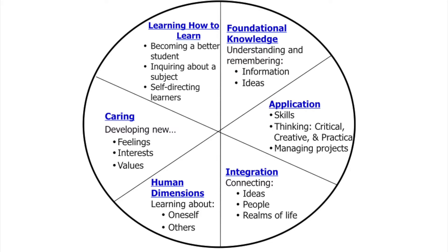Fink's taxonomy starts with foundational knowledge, which deals with foundational understanding of information and ideas. With this foundational understanding in place, one then moves onto the application of that knowledge, realized through the application of skills, critical and analytical thinking, and the management of projects. The next stage of the taxonomy is integration, which connects the application of knowledge to people and the real world or realms of life. As soon as you include others, you need to consider the human dimension, which requires the understanding of oneself and others. When you start working with others, you need to consider ethics, or caring, as you consider the feelings, interests, and values of others. The final part of Fink's taxonomy is learning how to learn, which deals specifically with how the learner will continue to learn on their own as a self-directed learner.